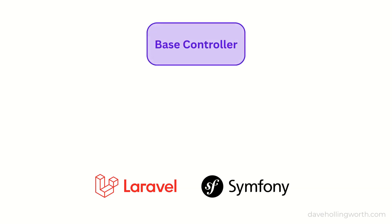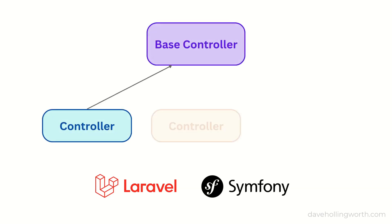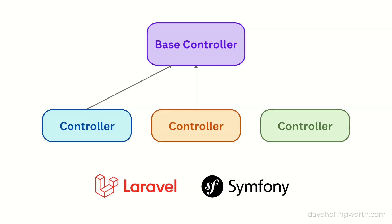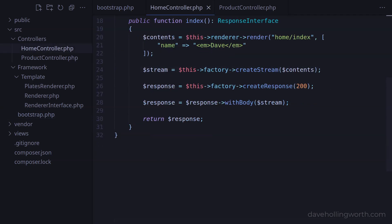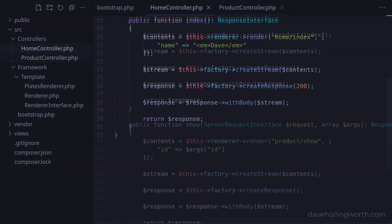In this video you'll learn why PHP frameworks like Laravel and Symfony provide a base controller class that contains methods that are shared across different controllers. This reduces repetition in the code and makes it easier to maintain. So far in this series we have three routes, which are handled by methods in two controller classes: the home controller and the product controller.